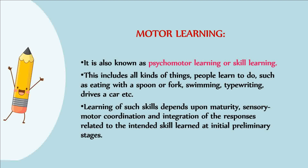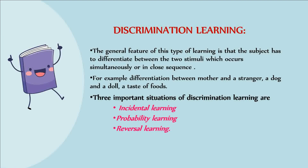Motor Learning: It is also known as psychomotor learning or skill learning. This includes all kinds of things people learn to do, such as eating with a spoon or fork, swimming, typewriting, driving a car, etc. Learning of such skills depends upon maturity, sensory-motor coordination and integration of responses related to the intent and skill learned at initial preliminary stages. Discrimination Learning: The general feature of this type is that the subject has to differentiate between two stimuli which occur simultaneously or in close sequence — for example, differentiation between mother and a stranger, a dog and a doll, or a taste of foods.